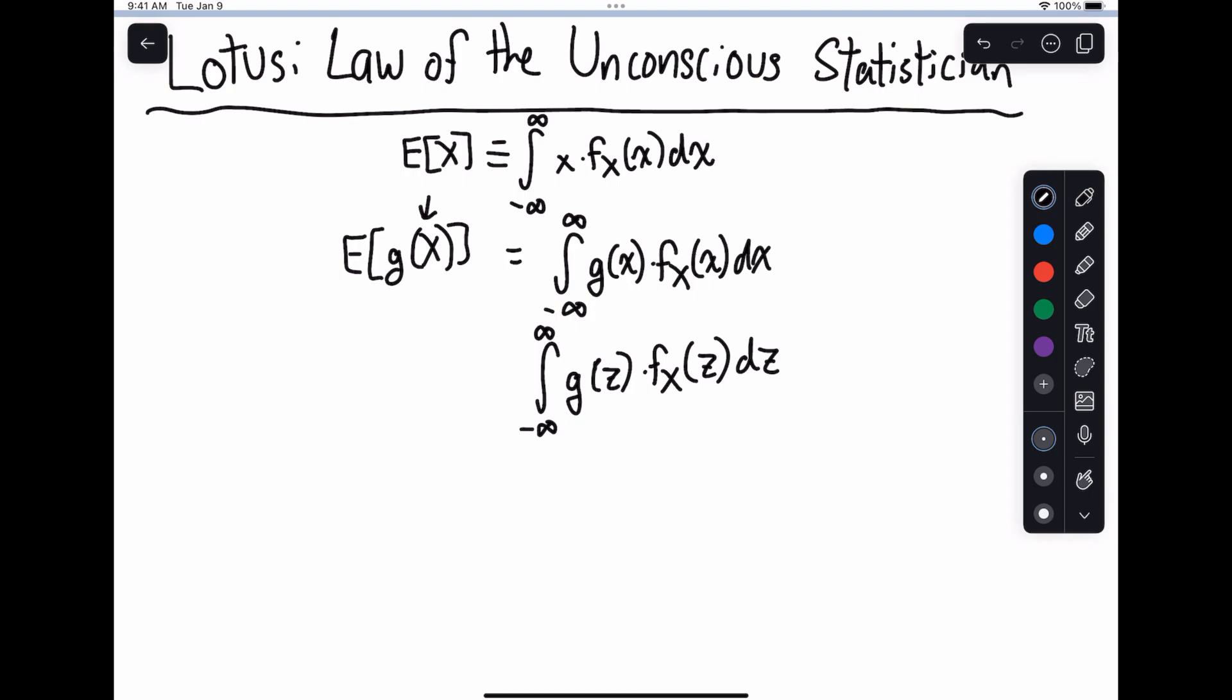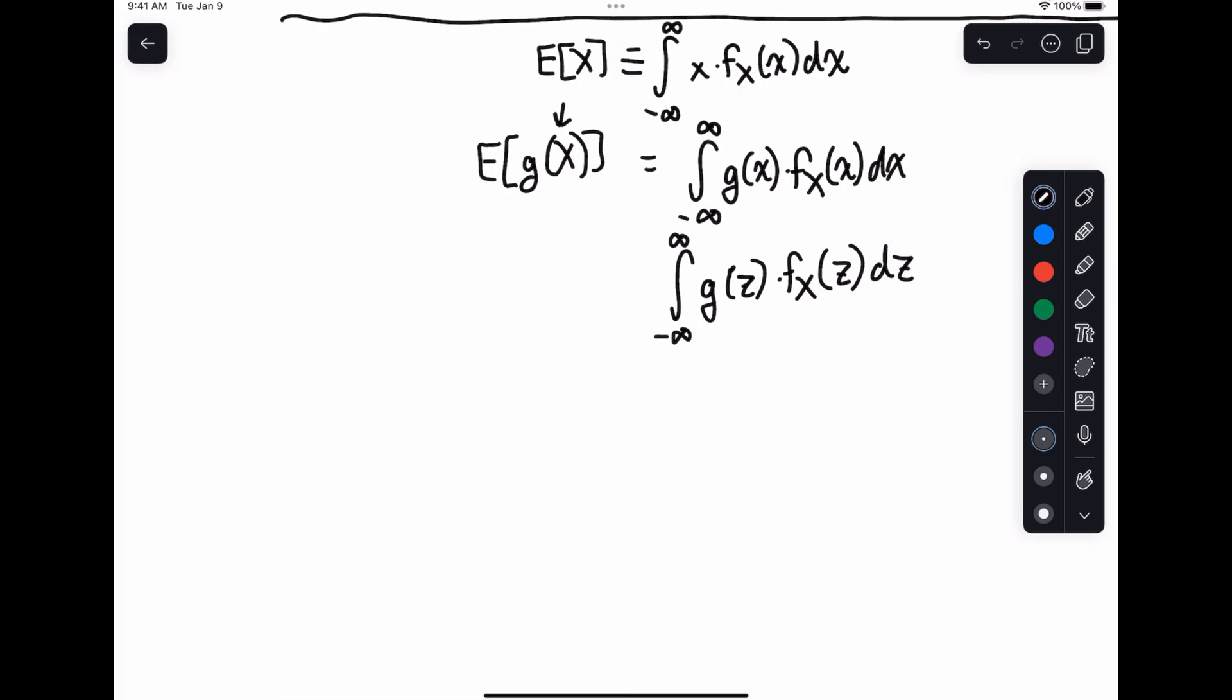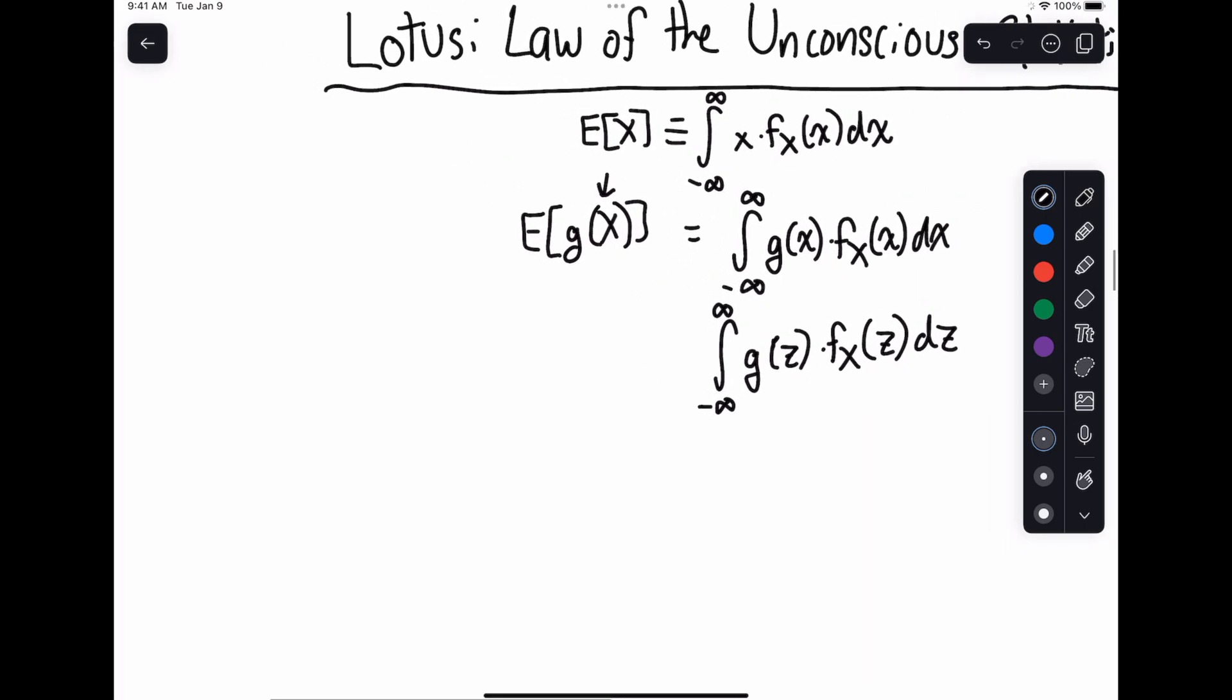So let's talk about a few common values of g of x, a few common functions that we have. Sometimes we'll write this rather than expectation, we'll say expectation over x of g of our function. So that way, we're taking the expectation over x. And this is really important because you could have multiple random variables. So you need to know what you're actually taking the expectation over.